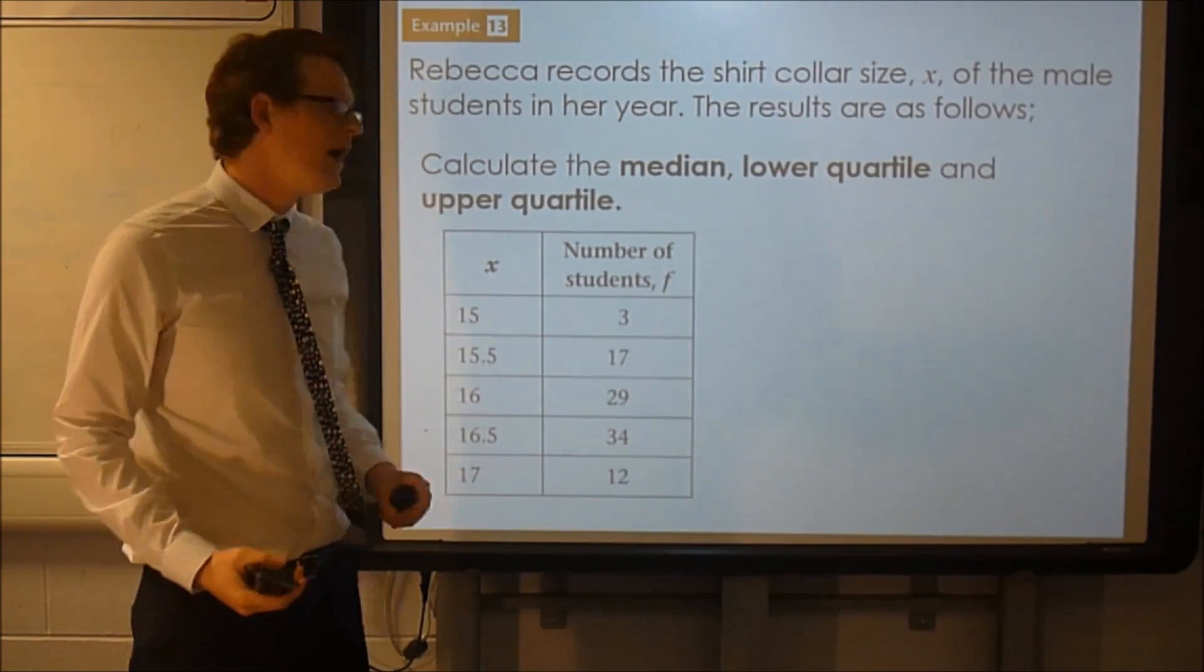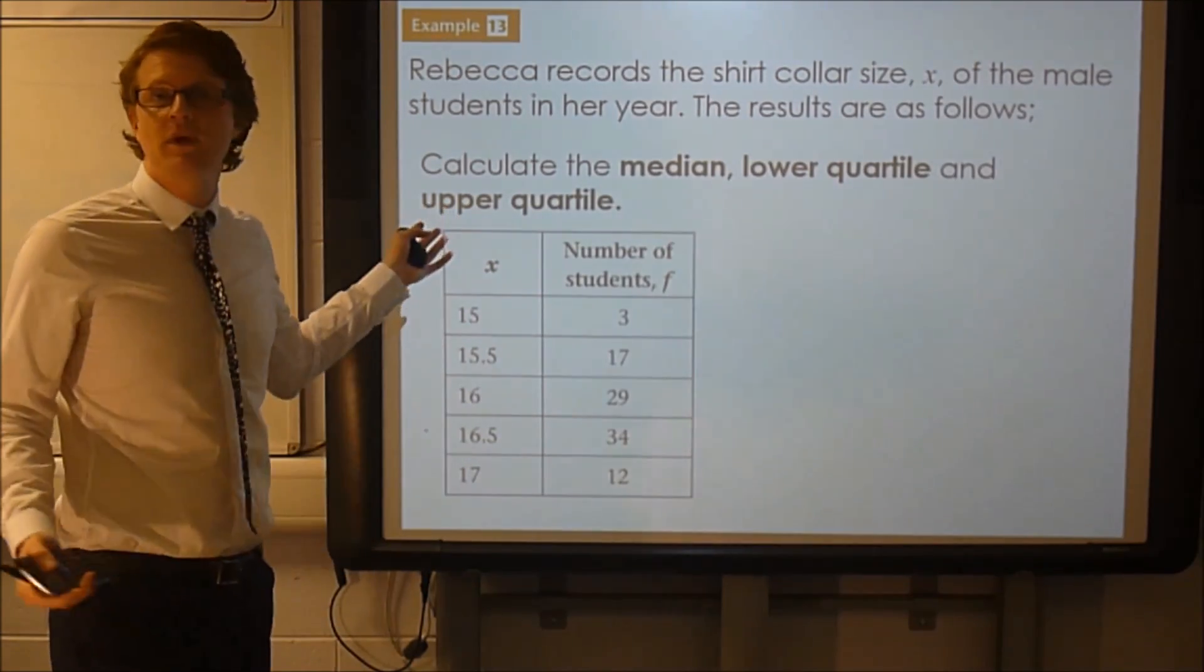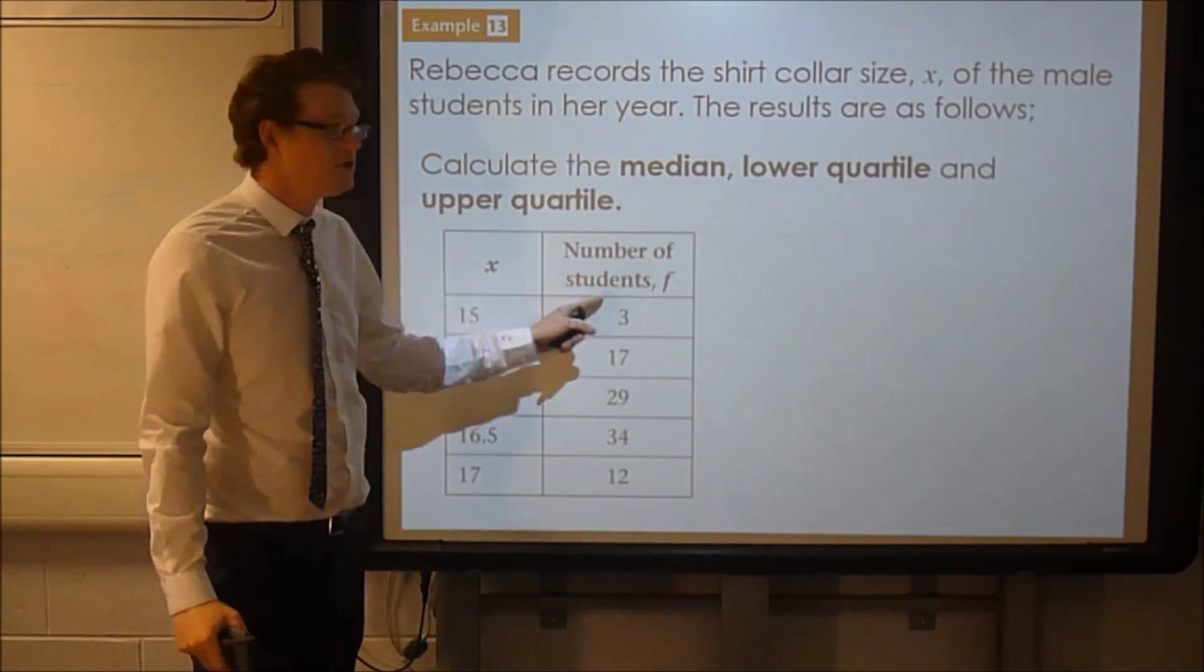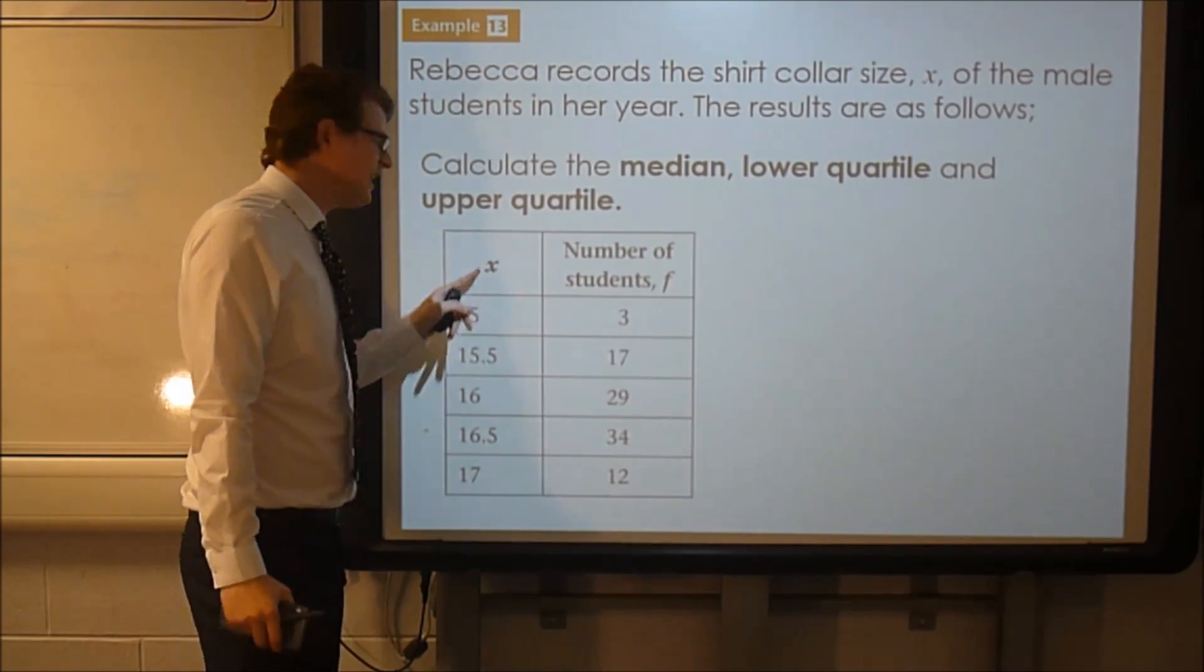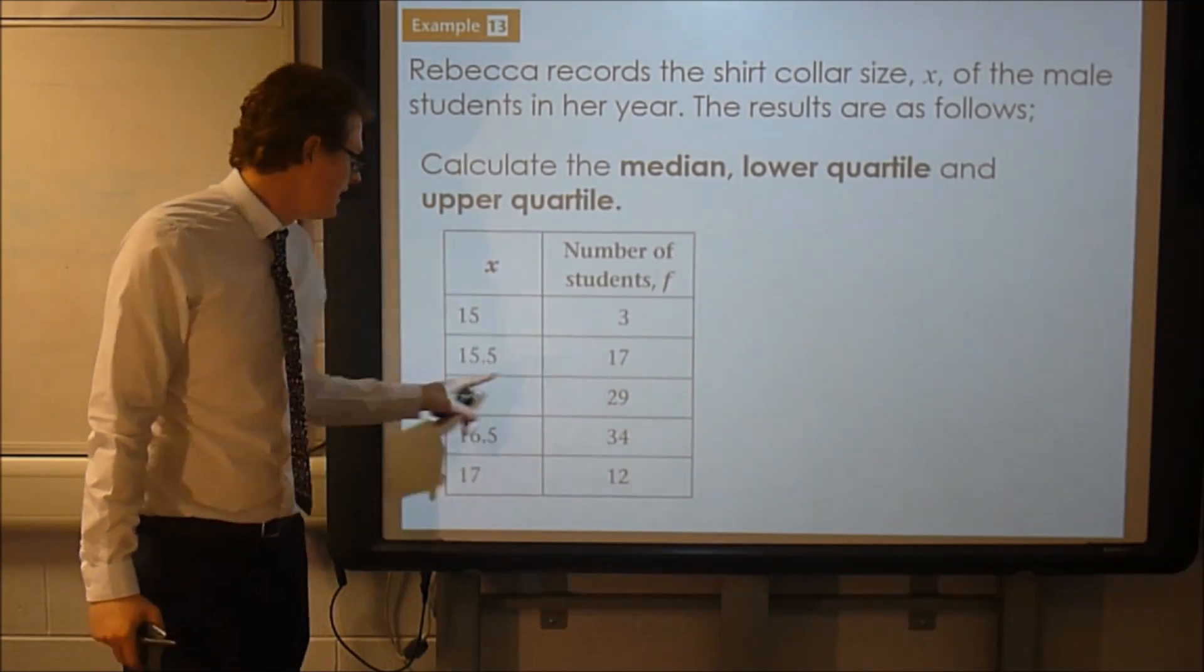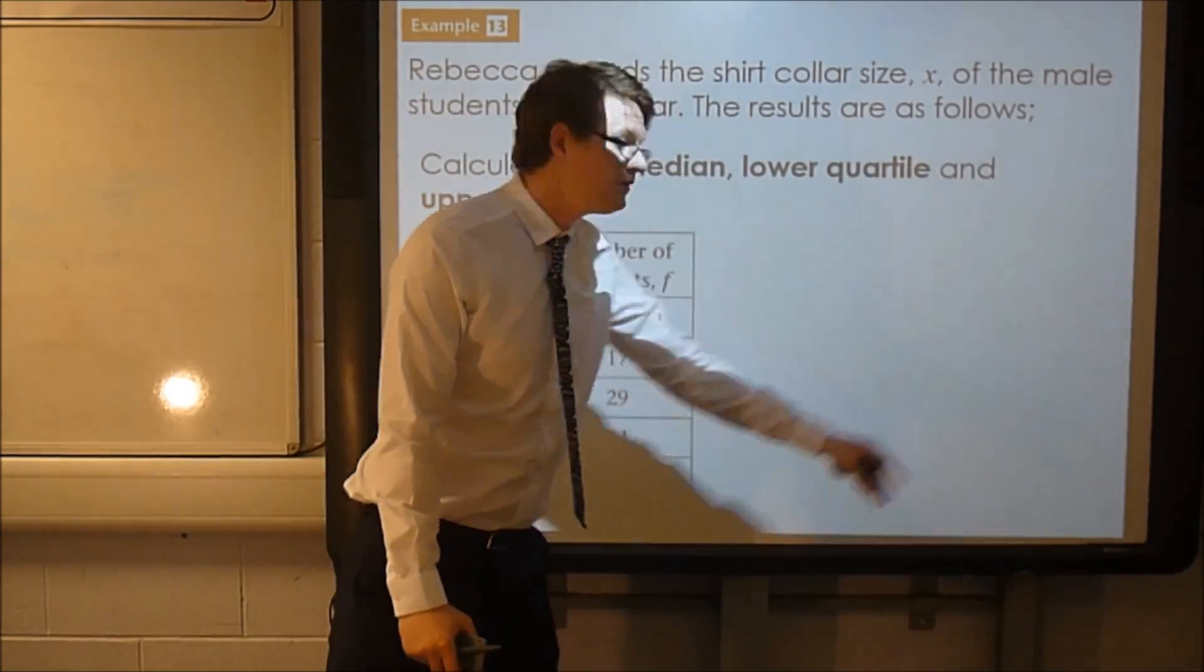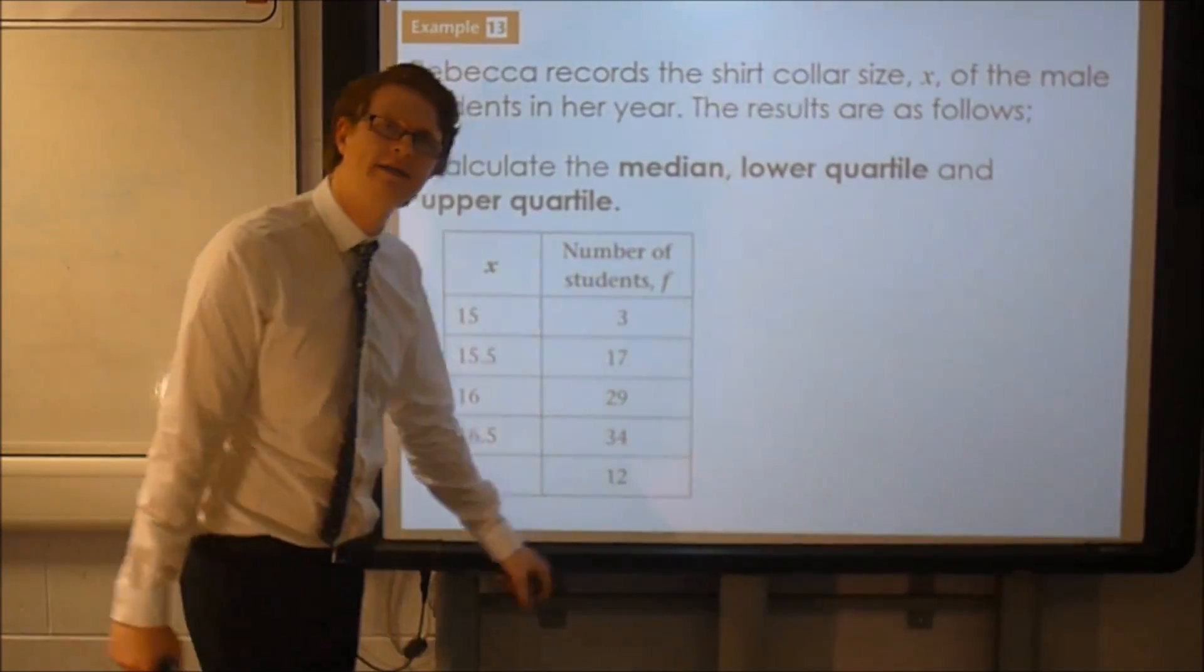Welcome to the second part of the video, where we're going to take the ideas about quartiles and apply them to when we've got data in a table. So this question is about Rebecca and shirt sizes. She's gone around and she's recorded a load of shirt sizes. And this is a table that shows the results. Number of students, frequency, f for frequency. So this is three, that means that three students had 15, I think it must be inches on their neck size. X is this variable we're using this time. 17, 15.5, 29, 16, and so on. Now if you wrote them out as a list, which you could do, that would say there was three that had 15, 15, 15, 15, 15, 17, 15.5, and hang on, 15.5, you'd have a massive list. So you can see why they put it in the table.